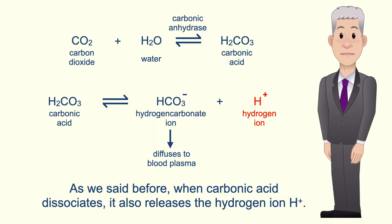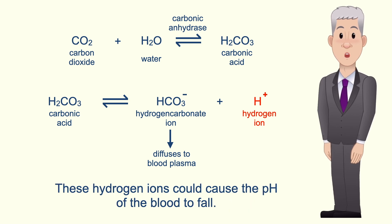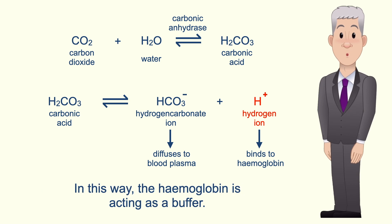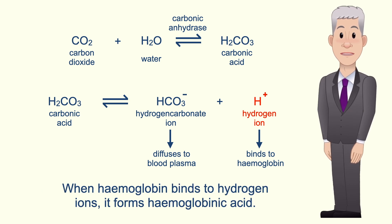When carbonic acid dissociates it also releases the hydrogen ion H+. These hydrogen ions could cause the pH of the blood to fall. However, to prevent this, the hemoglobin in red blood cells can bind to hydrogen ions, and in this way the hemoglobin is acting as a buffer. When hemoglobin binds to hydrogen ions it forms hemoglobinic acid.